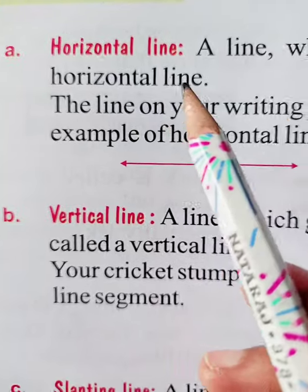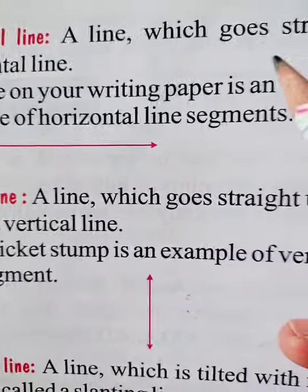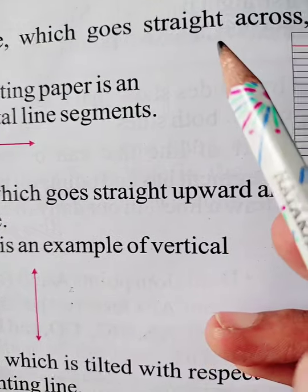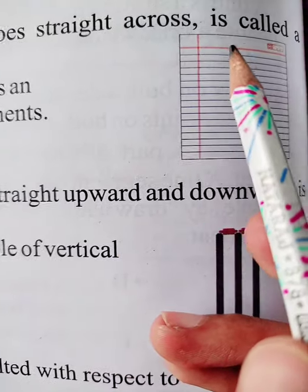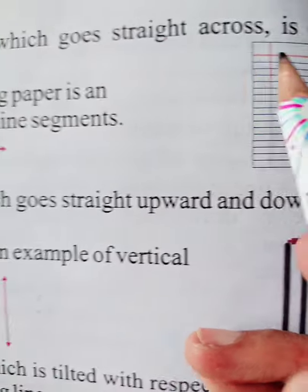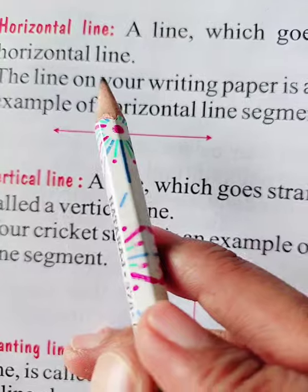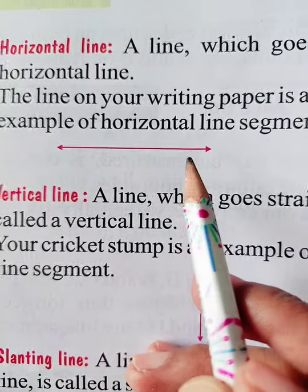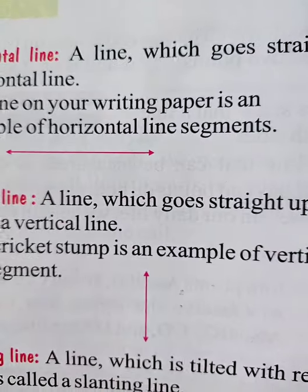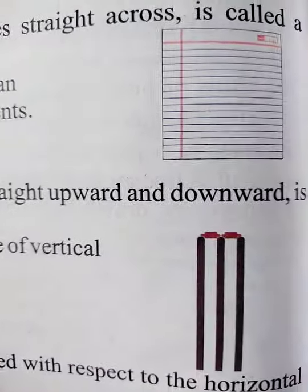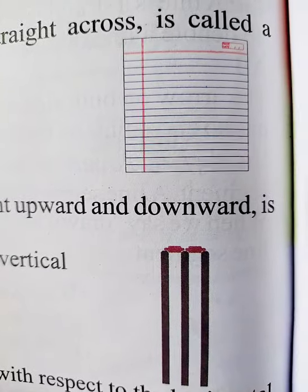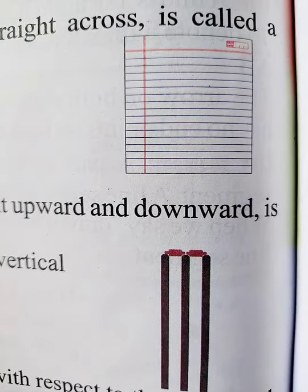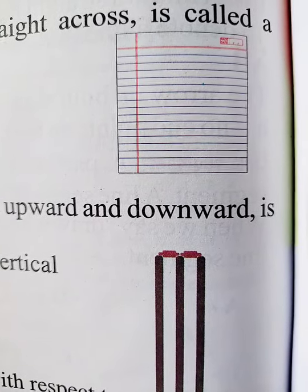It's your horizontal line. A line which goes straight across is called a horizontal line. The line that goes completely straight sideways — that is called your horizontal line. You can see this type of lines in your notebook.